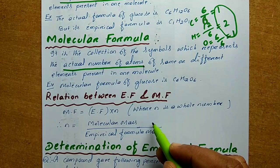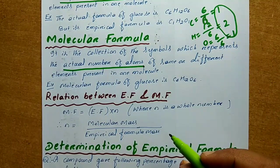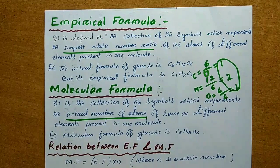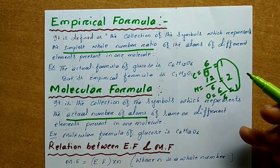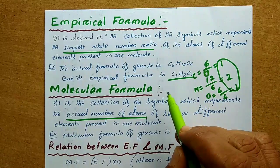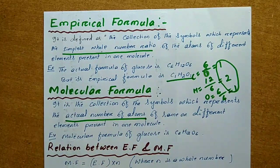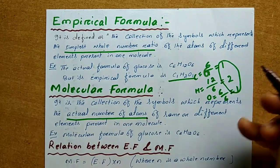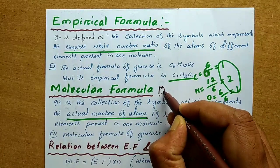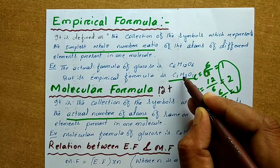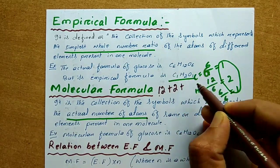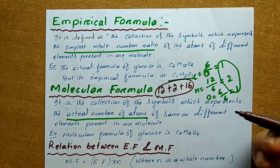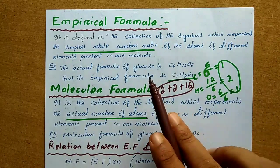All of you know how to calculate molecular mass of a compound. If anyone asks how to calculate empirical formula mass, it's very simple. For the compound CH2O: carbon is 12, 2 hydrogen atoms give 2, and 1 oxygen is 16. By adding these numbers you will get the empirical formula mass.